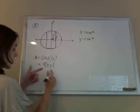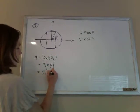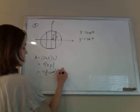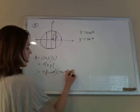So now we just plug that into here. 4 times the absolute value of r cos theta for the x, and r sin theta for the y.